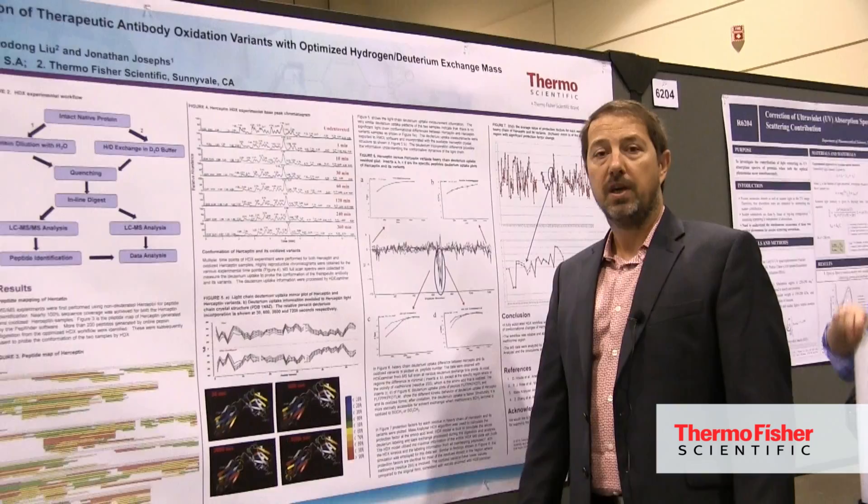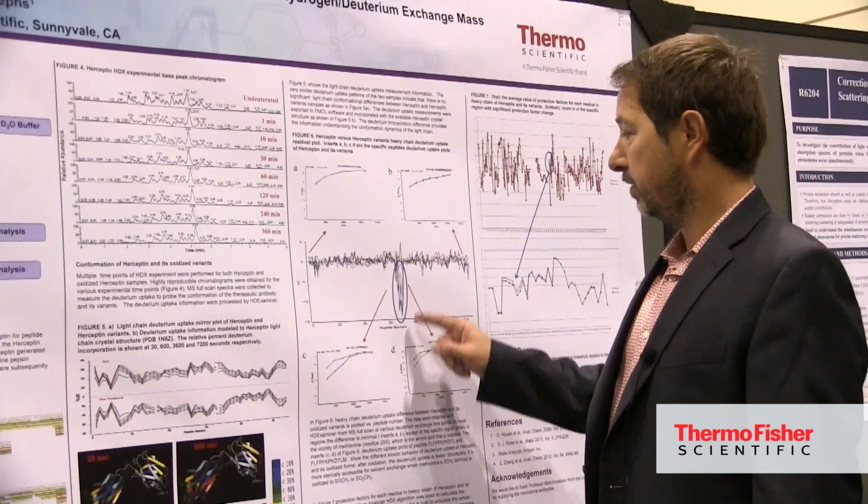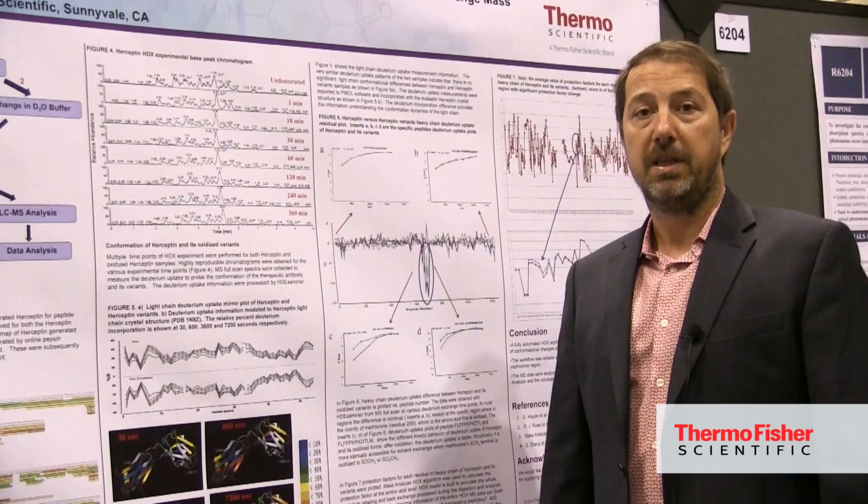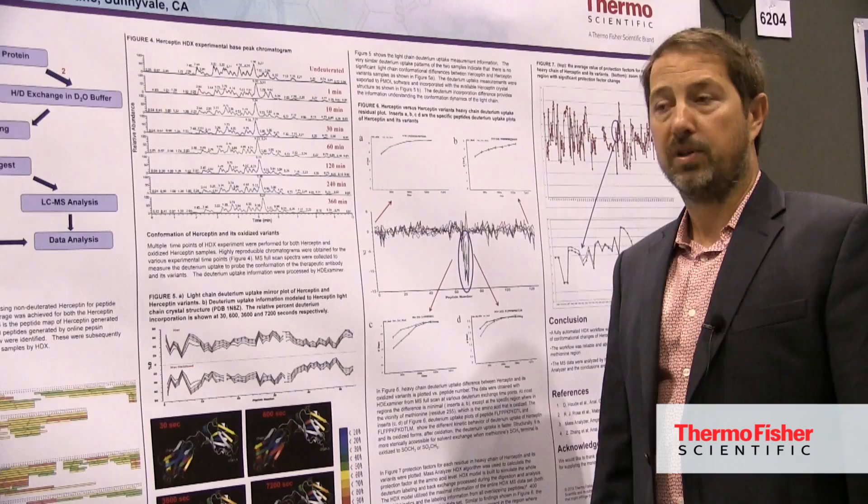What you can see here on these figures is that for most regions there is no difference between the trastuzumab and the oxidized form of trastuzumab. But in this region, you can clearly see a difference. This region corresponds to the methionine at position 255, where the oxidized form is present.